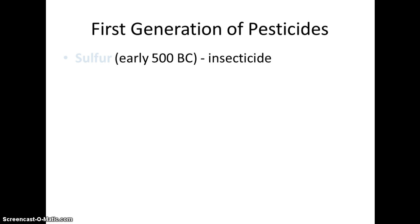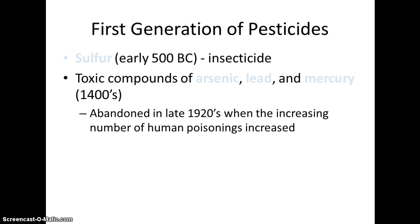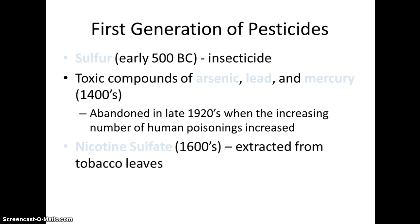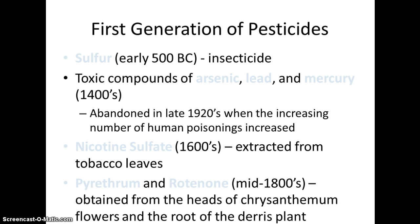The first pesticides we used were things found naturally: sulfur, and toxic compounds of arsenic, lead, and mercury. We noticed that as we ate foods treated with these pesticides, human poisonings started to increase, because these are metals that can build up in the body. Nicotine sulfate was also used, extracted from tobacco leaves, along with pyrethrum and rotenone, which come from chrysanthemum flowers and deris plants.